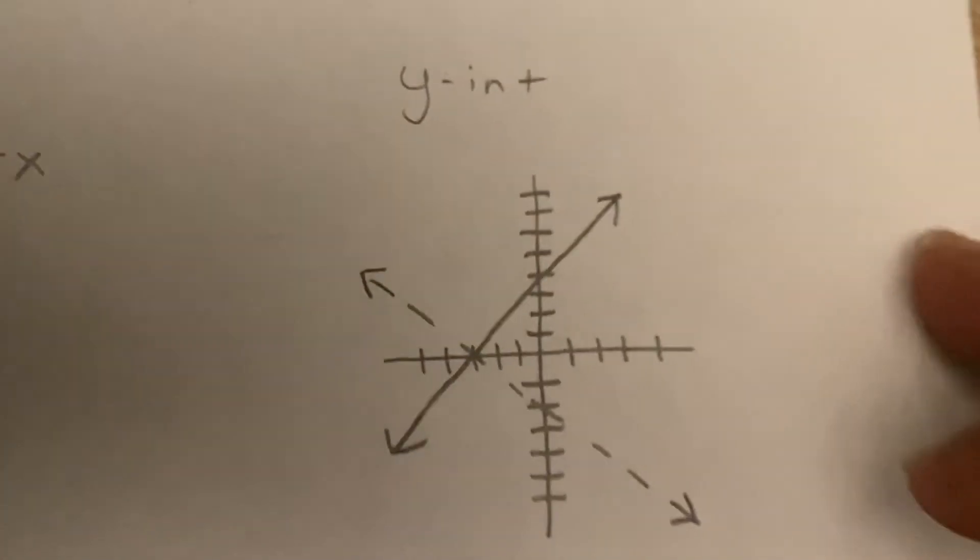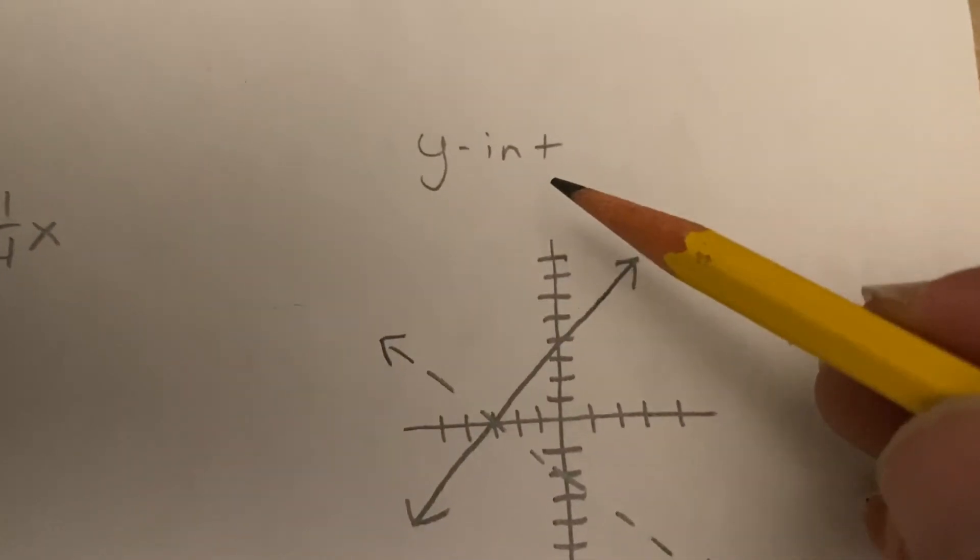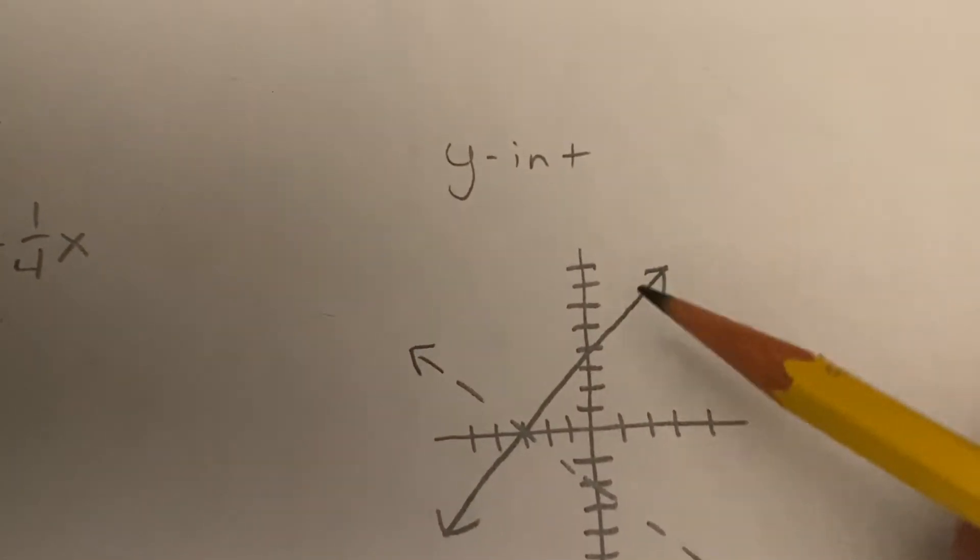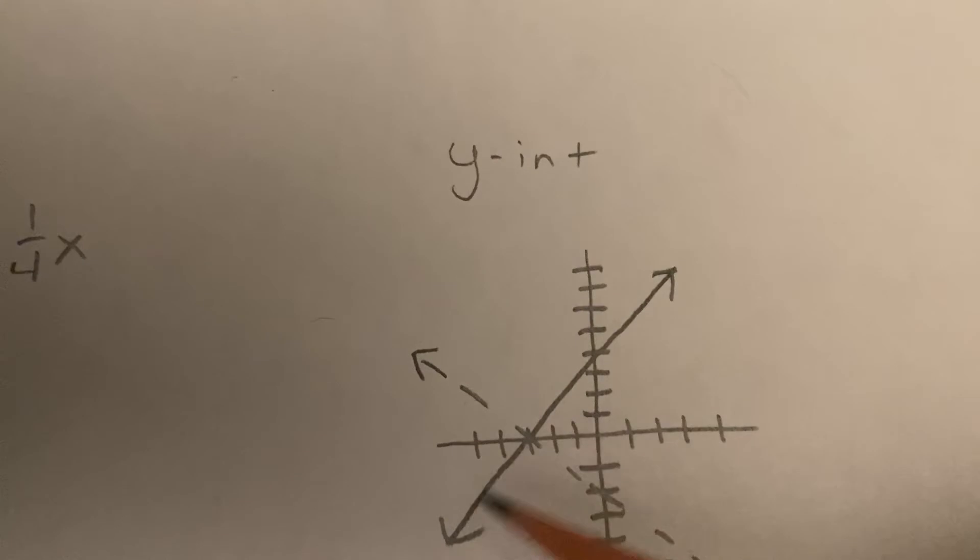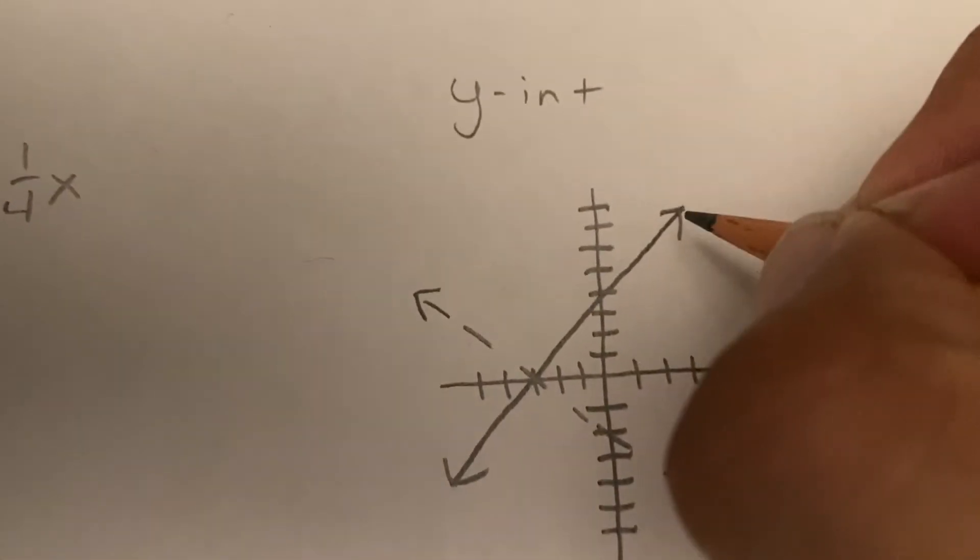Now, let's get to y-intercept. Y-intercept is when the line, this line that I've graphed, hits the y-line. So when does it hit it? So let me check.